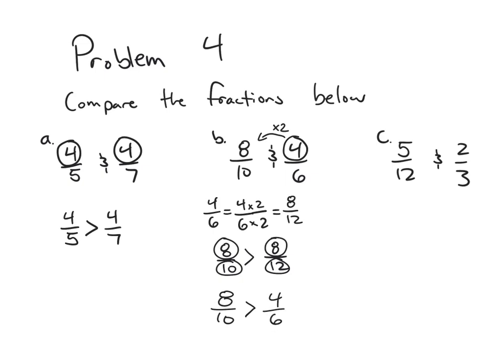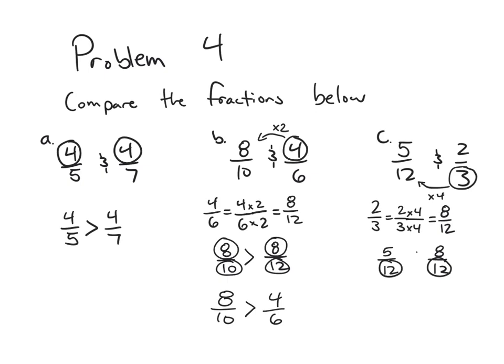Finally, Problem 4C compares five-twelfths and two-thirds. Nothing in common, but if I multiply the denominator of two-thirds by four, I get twelve — matching the first fraction's units. Multiplying both numerator and denominator by four gives eight-twelfths. Comparing five-twelfths and eight-twelfths with the same denominator, eight-twelfths is larger than five-twelfths, so five-twelfths is less than two-thirds.